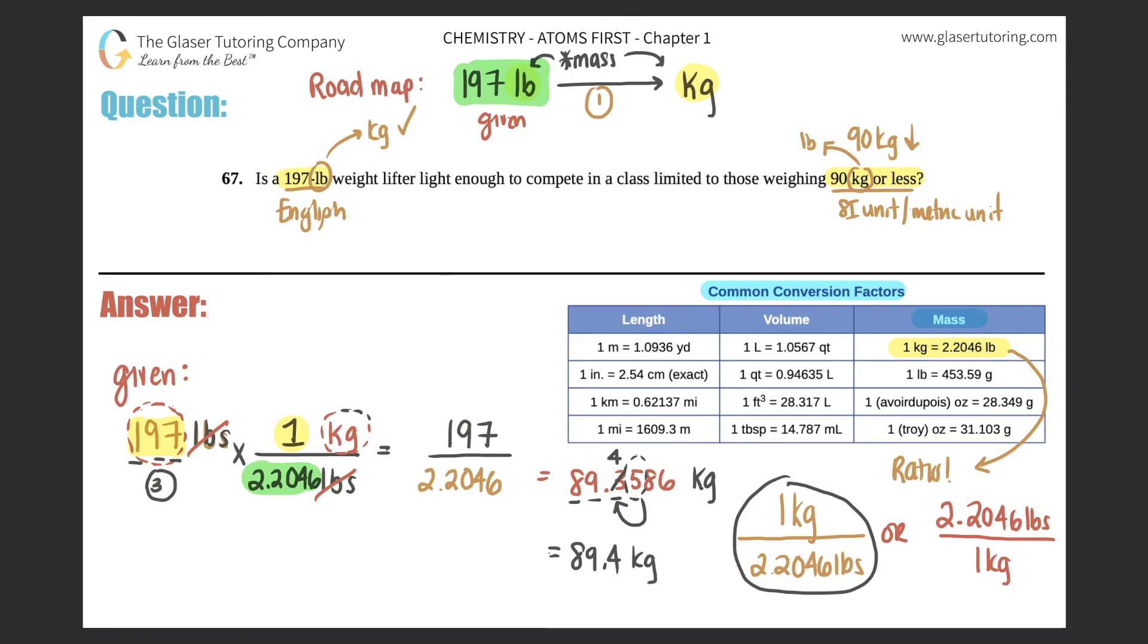So that means that the 197 pound weightlifter really equals 89.4 kilograms. Now the question was, is this weightlifter light enough to compete in a class that's limited to weighing 90 kilograms or less? Well, he just, or she just made it. They were 89.4, which is less than 90 kilograms. So the answer would be yes. The weightlifter is light enough to compete. Box that answer off.